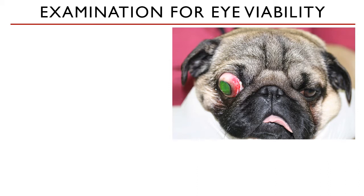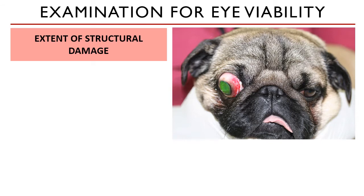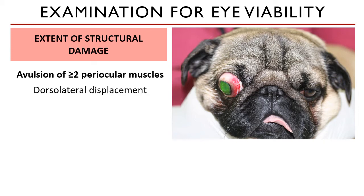Brachycephalic breeds have very prominent globes — what we call 'luwa ang mata' — and large palpebral fissures. Even the wrong kind of restraint can cause their eyes to proptose. In assessing eye viability, the extent of the eye damage and its associated structures need to be evaluated. The eye is said to be proptosed when there is avulsion of two or more periocular muscles. You may notice in our previous pictures that the eye is displaced in a certain direction — dorsolateral displacement. However, in the pug picture, a ventrolateral displacement can also occur.